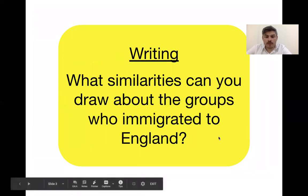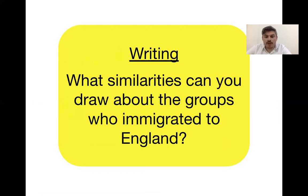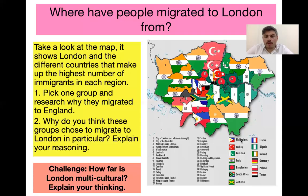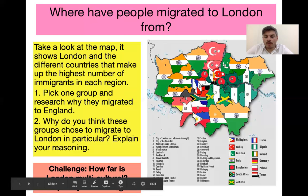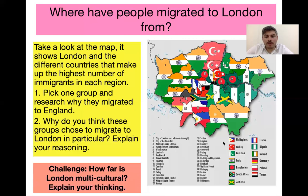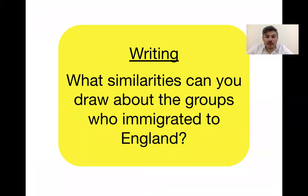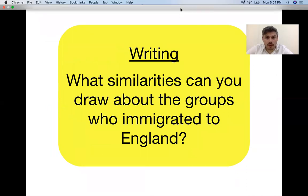The final task for today: on the previous map we saw lots of different countries. Are there any similarities between them? Looking at Philippines, Turkey, Pakistan, India, Poland, Yemen, South Africa, and Jamaica — what links these countries? What do they share? Why are people leaving all of these countries — is there anything in common between them? Please write a short paragraph answering this, then pause the video.